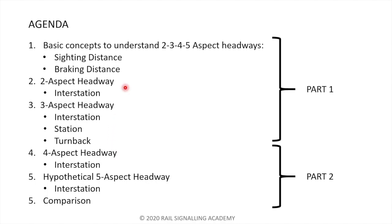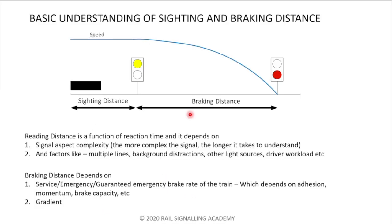That will constitute the first part of this video. In the second part we'll talk about four aspect headway, then a hypothetical five aspect headway, and at the end I'll be comparing all the different signaling systems. So let's look at the basic understanding of sighting and braking distance. Sighting distance is the distance from which, when the driver sees the signal, he has enough time to recognize and interpret it.